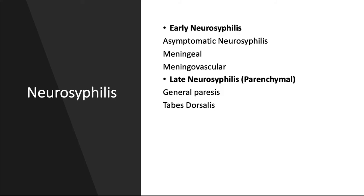Meningeal syphilis results from diffuse inflammation of the meninges. Typical symptoms include headache, nausea, vomiting, neck stiffness, photophobia, cranial nerve deficits, and possibly seizures. Meningovascular syphilis is defined as the inflammation of the meninges as well as endarteritis causing thrombosis and infarction of cerebral tissue. Early symptoms are nonspecific and include headache, nausea, vomiting, and vertigo. It causes cerebral vascular syndrome, and the symptoms depend on the site of thrombosis. Spinal cord vessels may also be affected, resulting in meningomyelitis and spastic weakness, particularly in the lower extremities, sensory loss, and muscular atrophy.